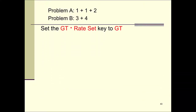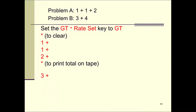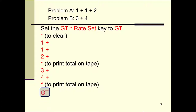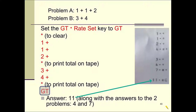Again, set your GT/rate-set to GT. We're going to do the first problem: clear, asterisk, one plus one plus two plus, and we're done with that addition problem, so hit asterisk. Then start the second problem: three plus four plus, we're done, so hit asterisk to print the total on your tape. Then to find the grand total and print it on your tape, hit the GT key. Your tape should show 11 with a G meaning grand total, along with the two answers, four and seven.